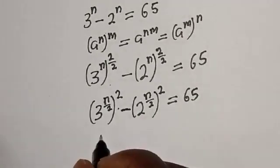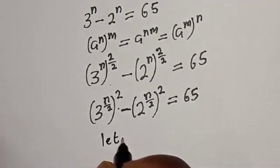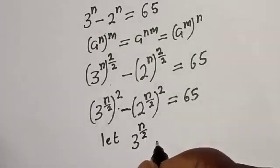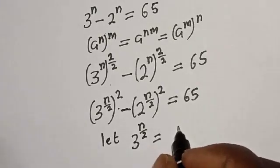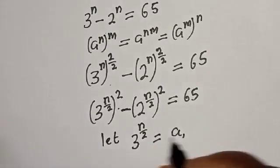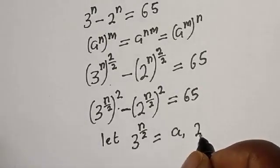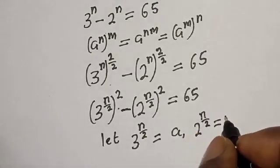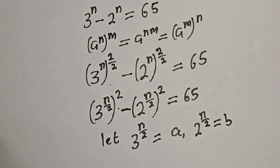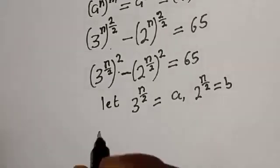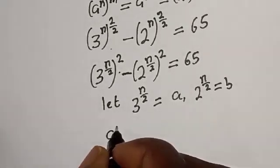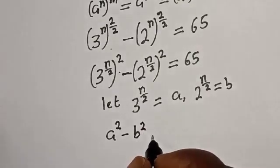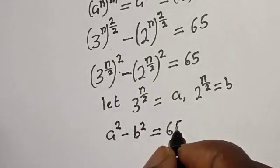Let 3 raised to power n over 2 be equal to a, and 2 raised to power n over 2 be equal to b. Then we have a squared minus b squared is equal to 65.